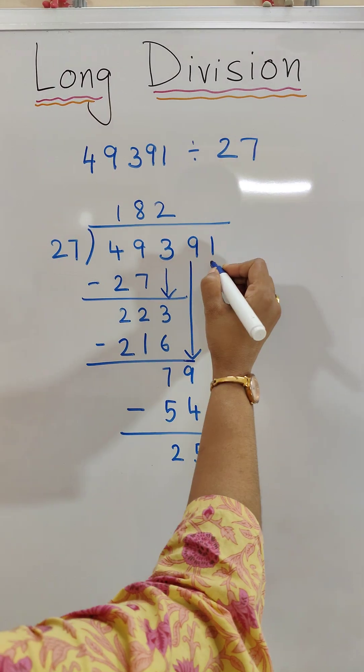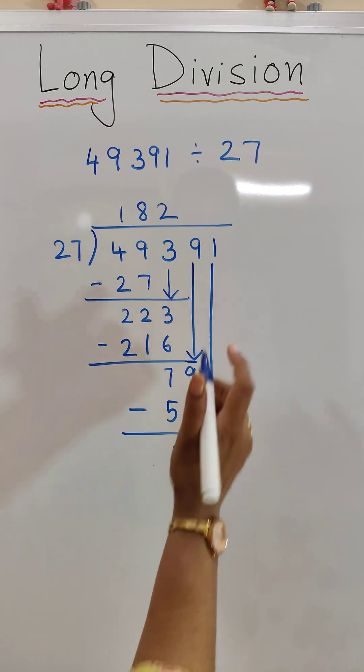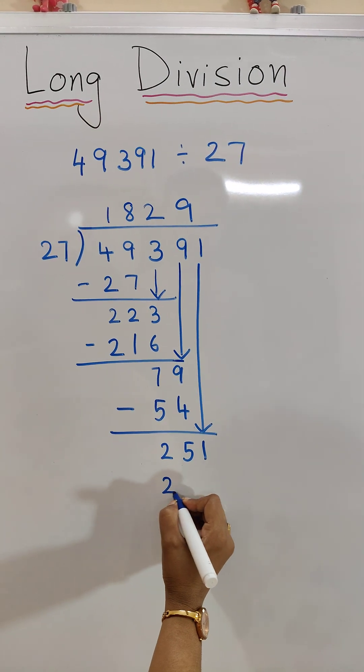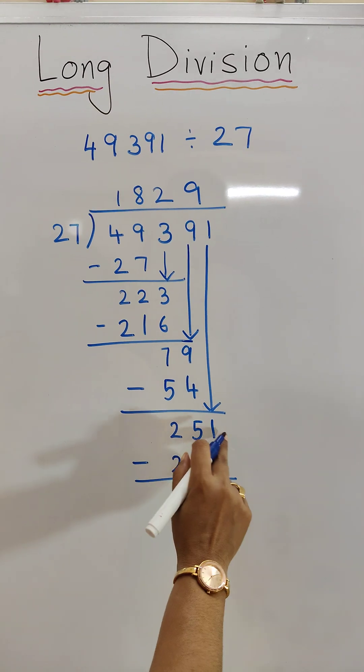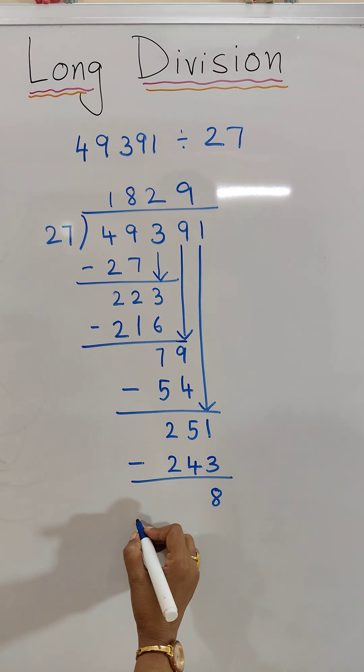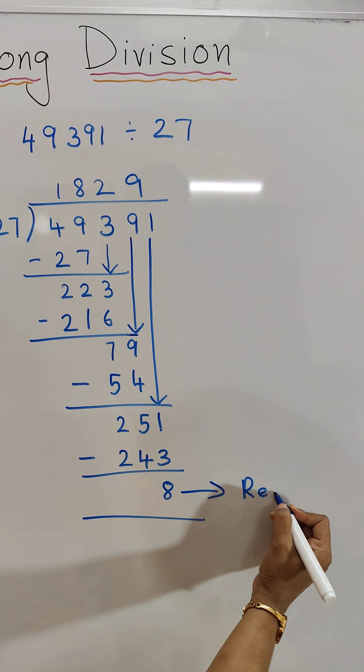Now bring down the 1, so it becomes 251. 27 times 9 is 243. When we subtract 251 minus 243, we get the remainder as 8.